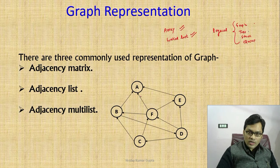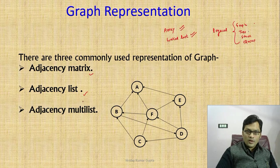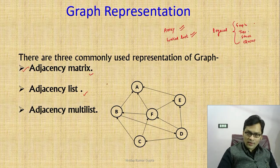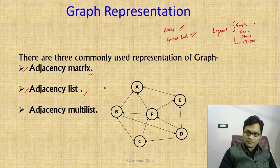Similarly, this graph will also be represented using a physical data structure — that is array and linked list. One is adjacency matrix, which is a type of two-dimensional array. So we are going to represent this graph using array, and the other physical data structure is linked list — adjacency list — using which we will represent this graph.